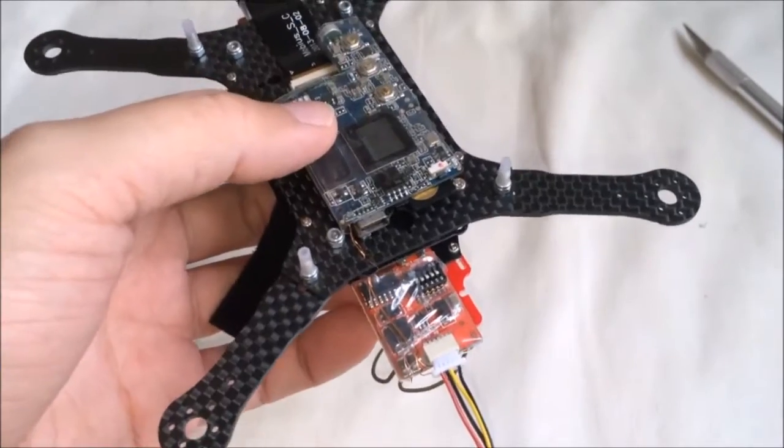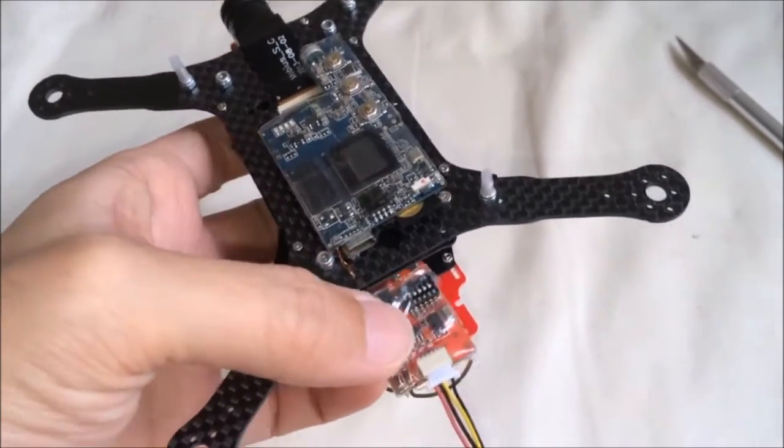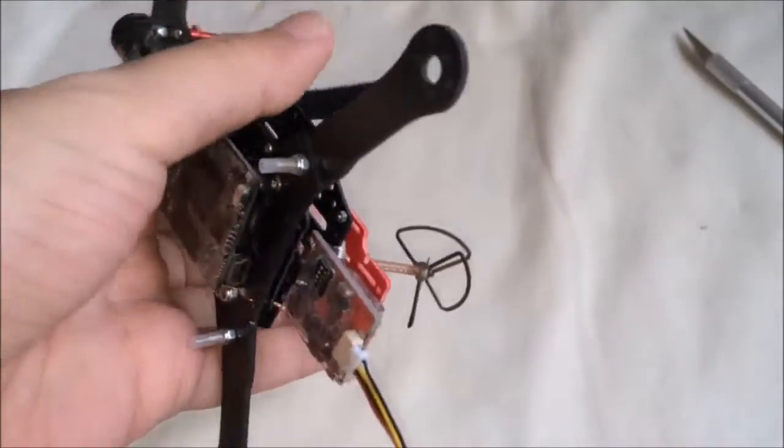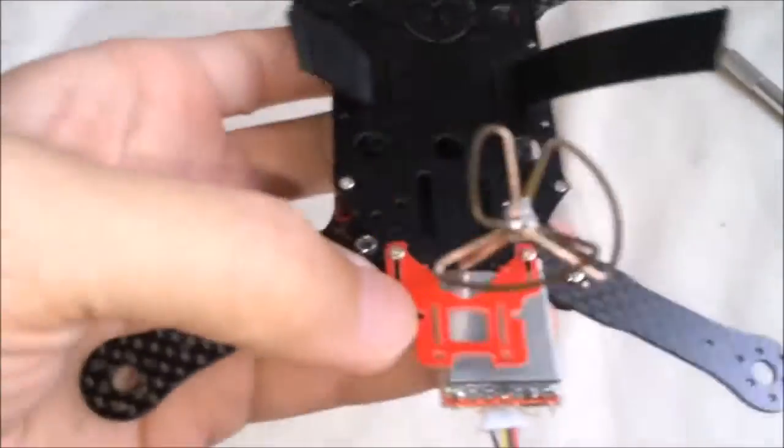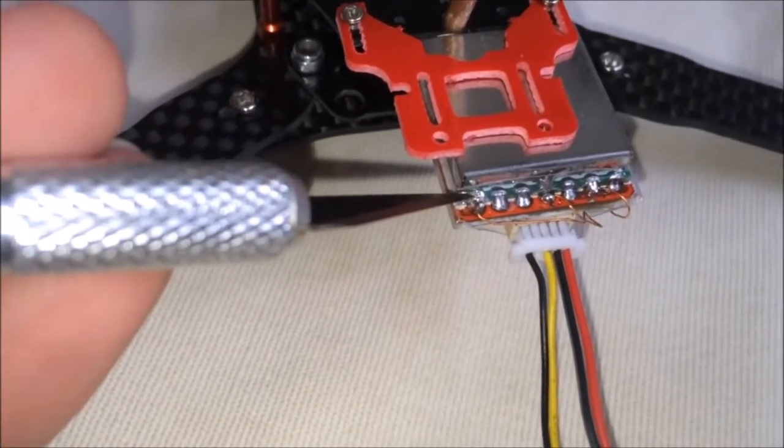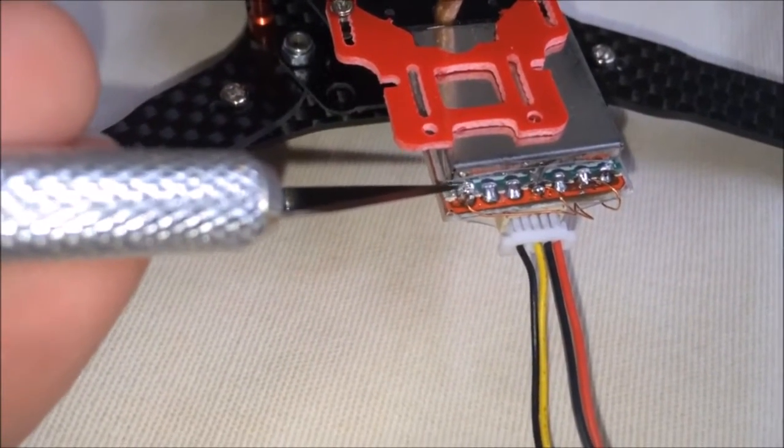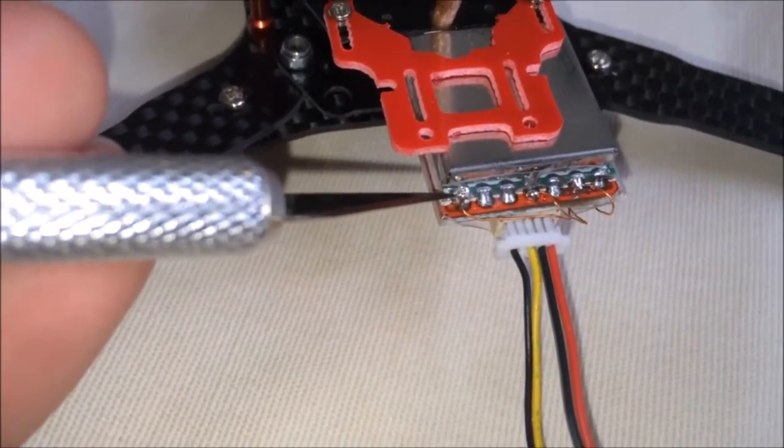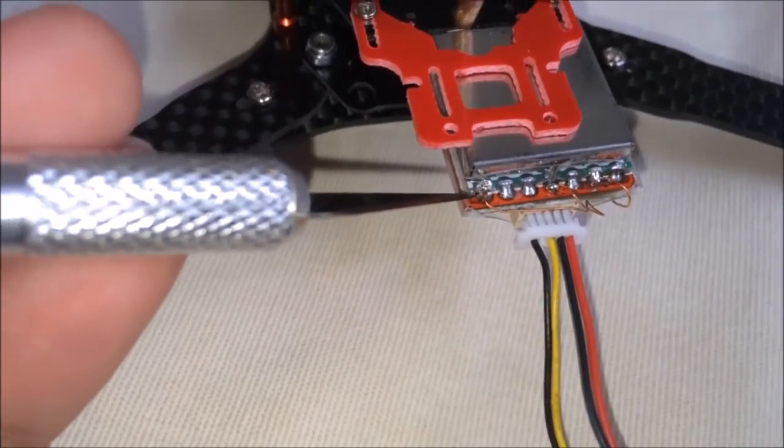Luckily we could tap power from this VTX. I noticed that on the module itself here, this is VCC. The voltage here is actually 4V, so we could use this output to power the Mobius camera.